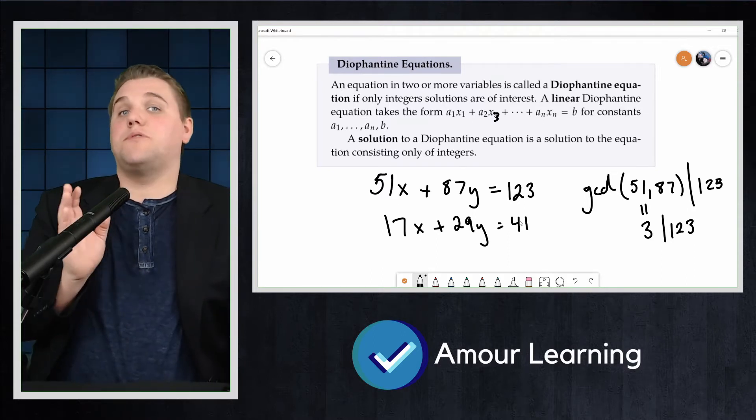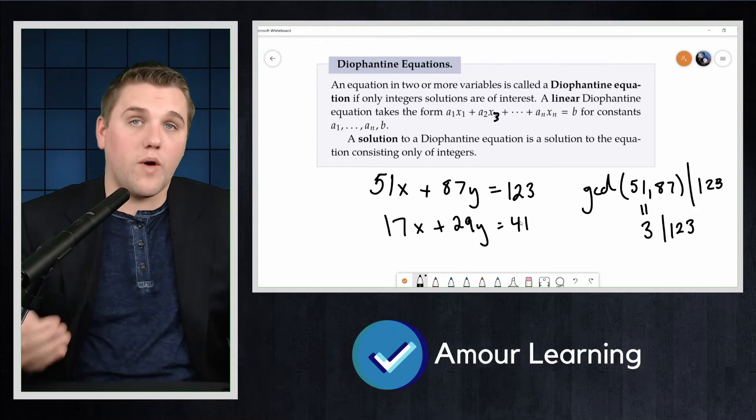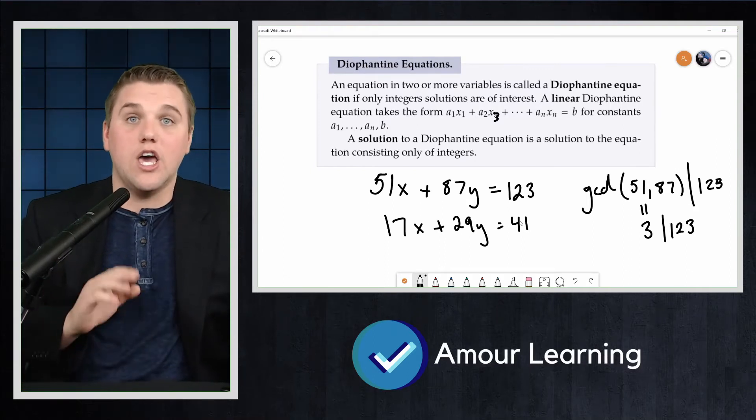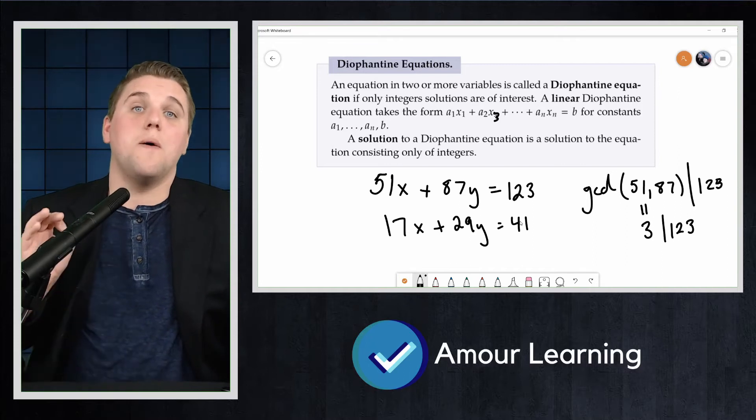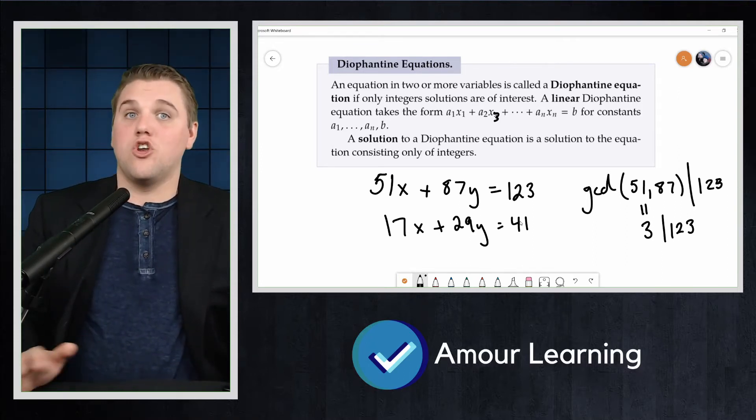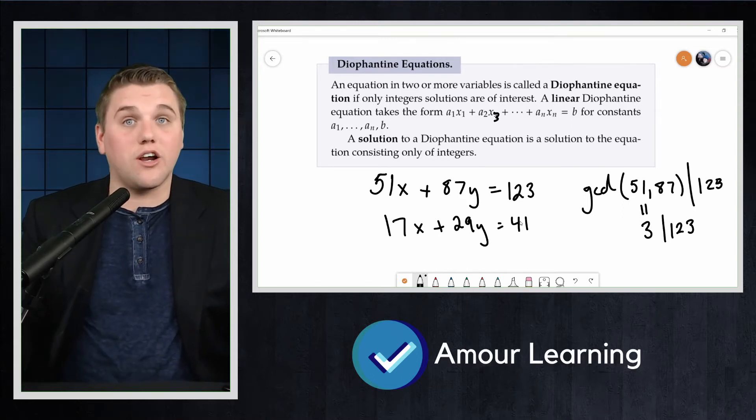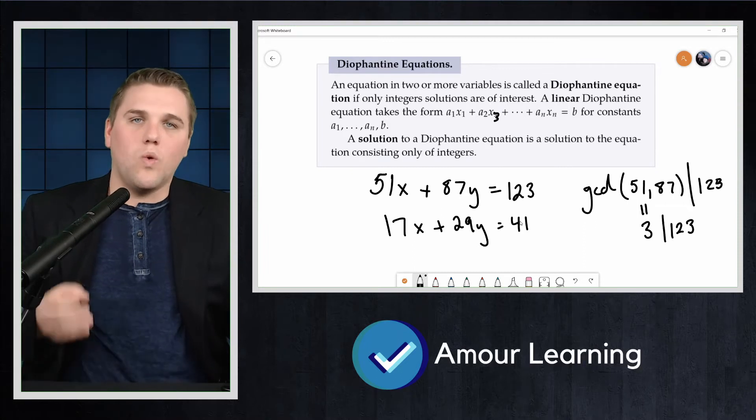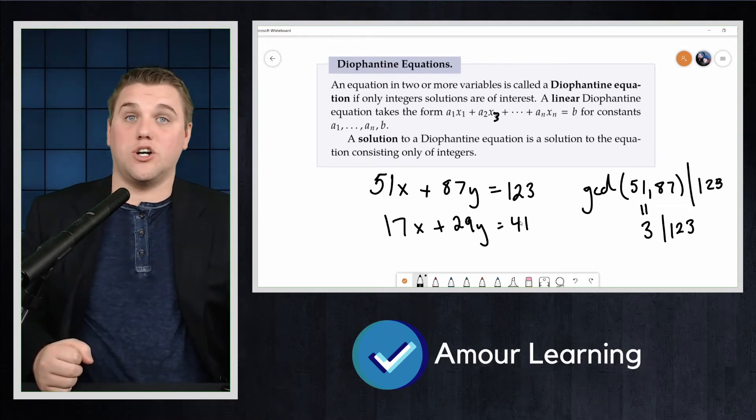Now observe that if there are going to be solutions, then for those values of x and y the two sides of the equation must have the same remainder as each other no matter what we divide by. In particular, if we divide both sides by 17 we must get the same remainder.